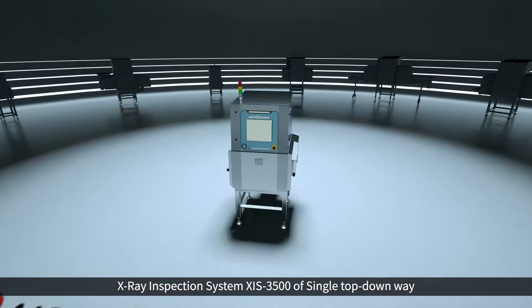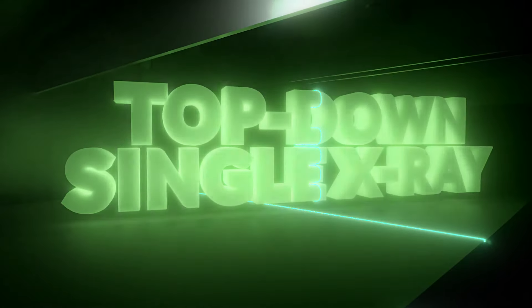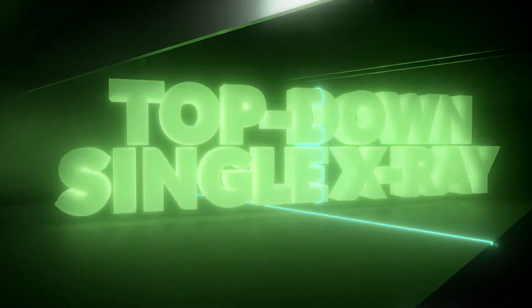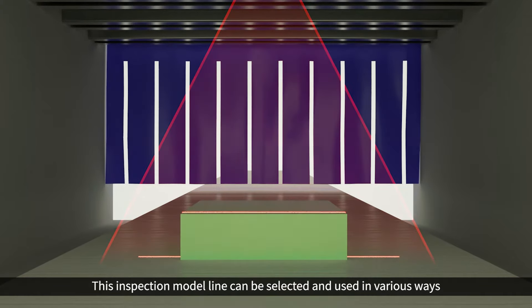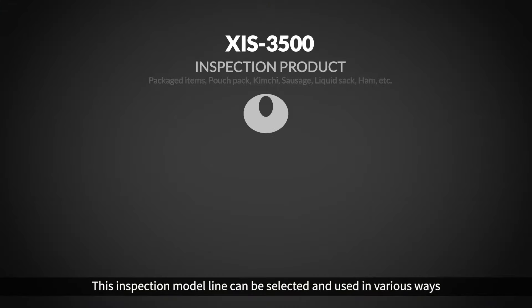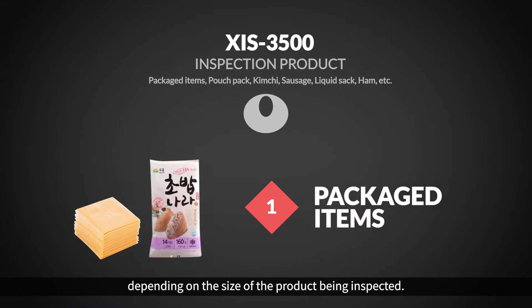X-Ray Inspection System XIS-3500 of single top-down way. This inspection model line can be selected and used in various ways depending on the size of the product being inspected.